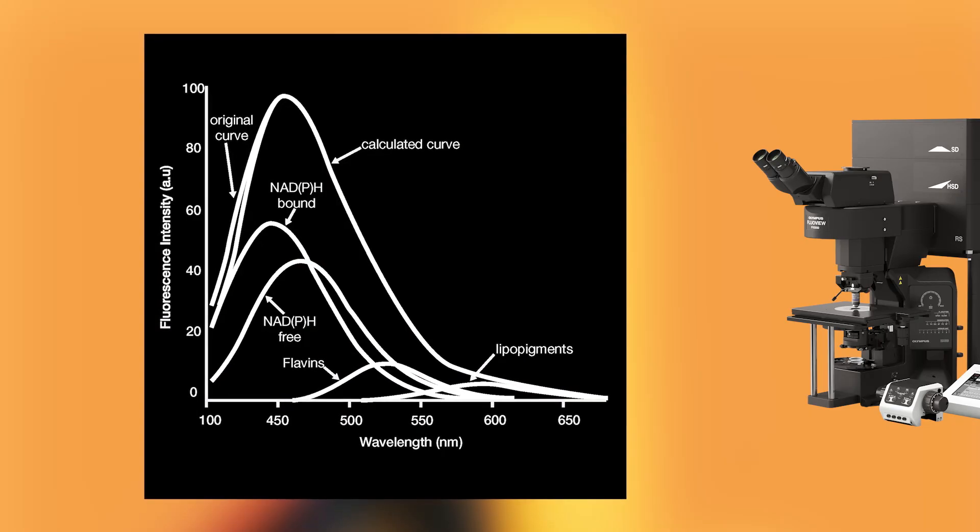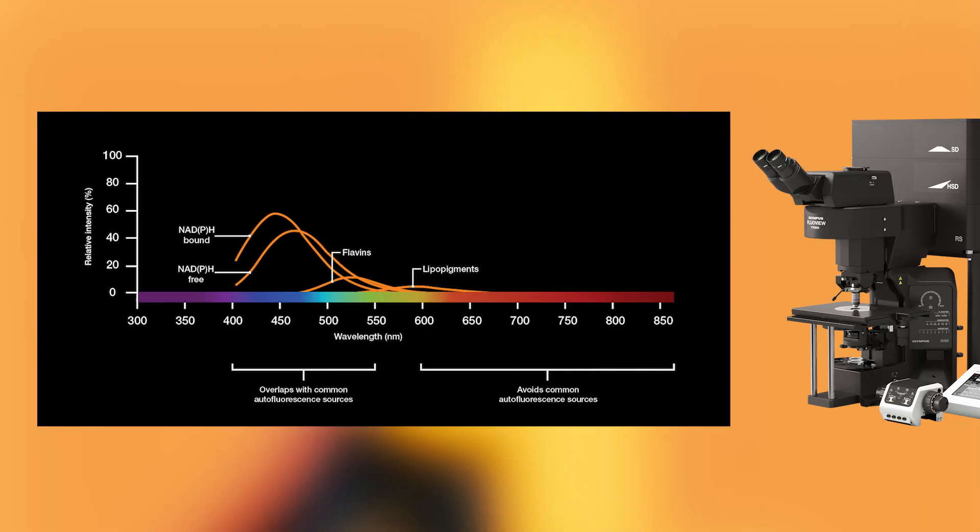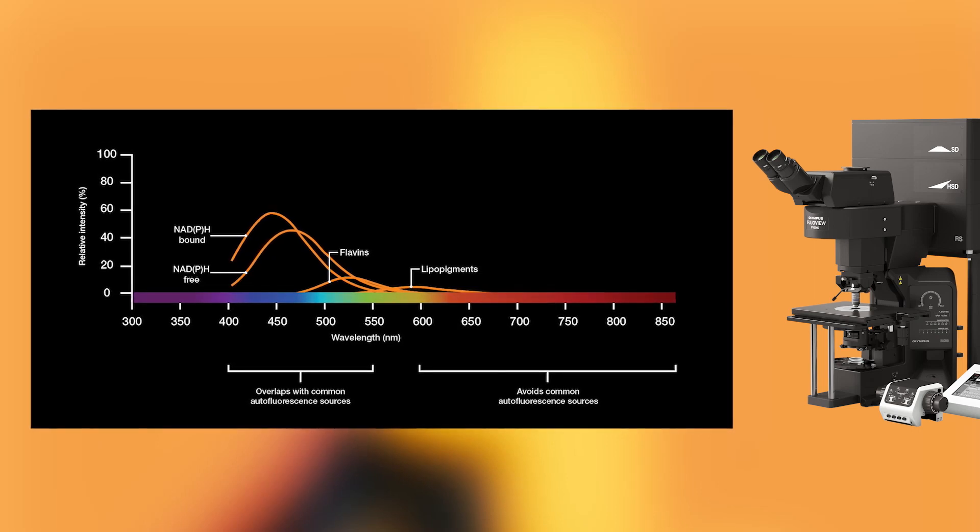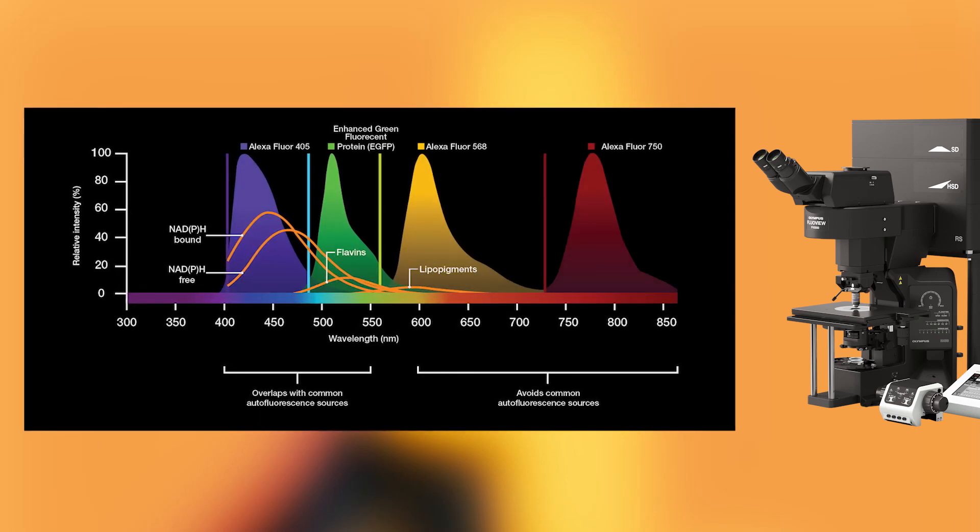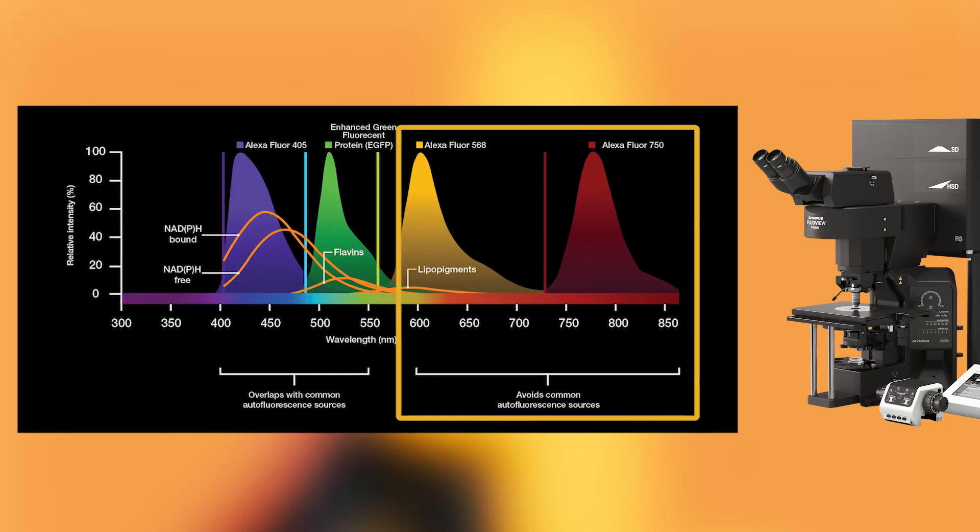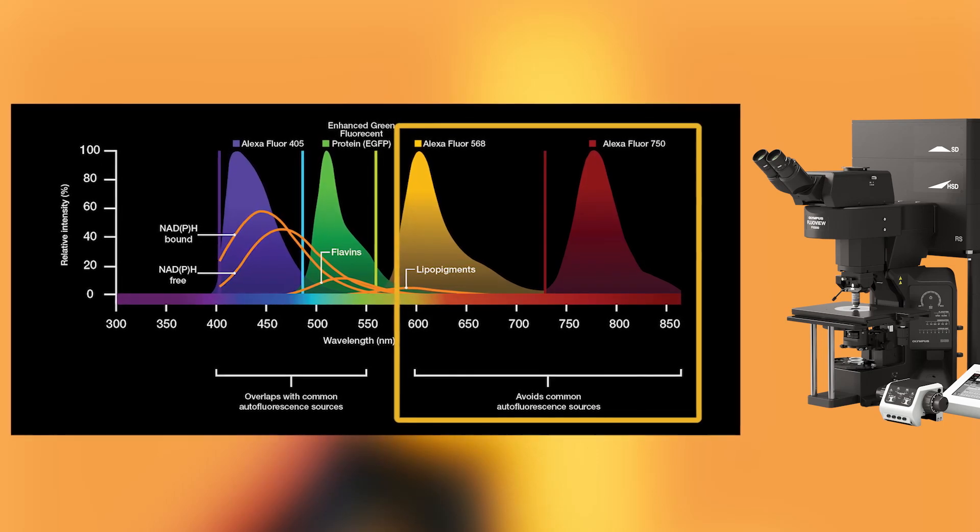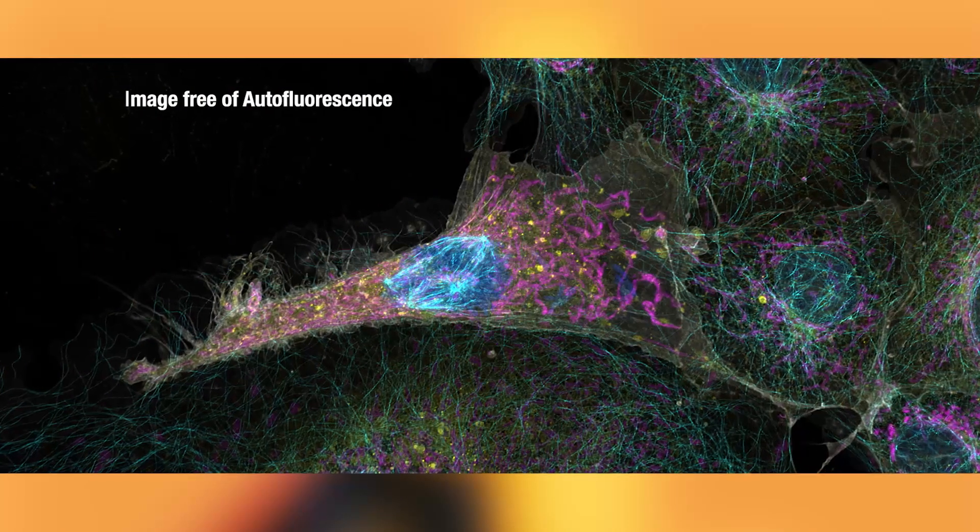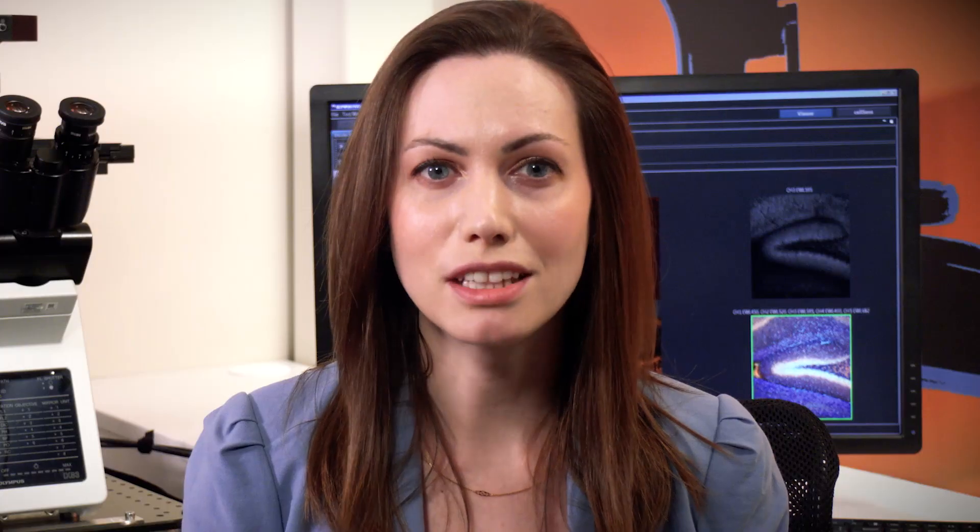The system also helps reduce autofluorescence in samples. Most autofluorescence overlaps with common blue or green fluorophores, such as DAPI and GFP. By shifting your dyes towards the red end of the spectrum, you can avoid autofluorescence and acquire more accurate results. Live cell imaging also benefits from near-infrared imaging.